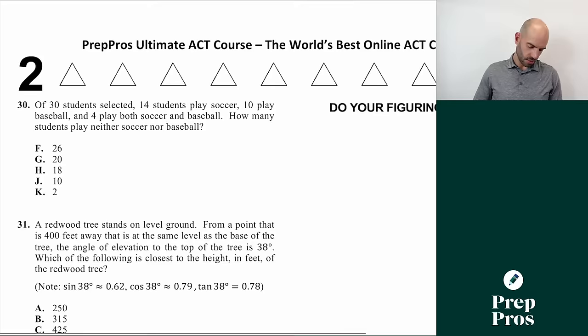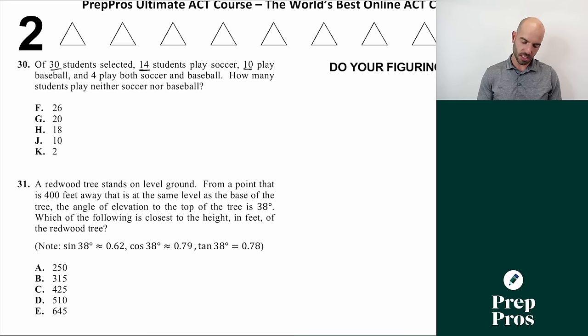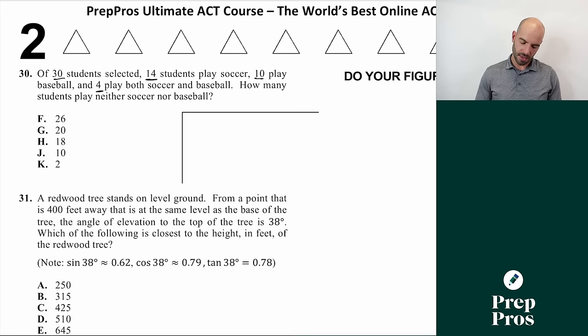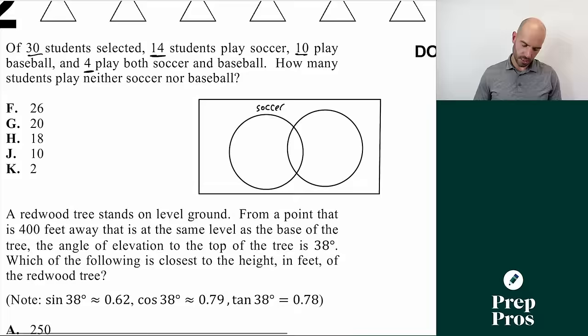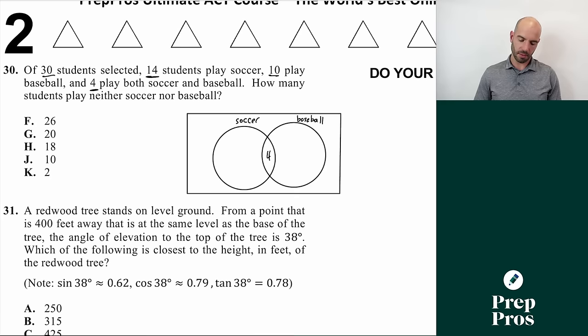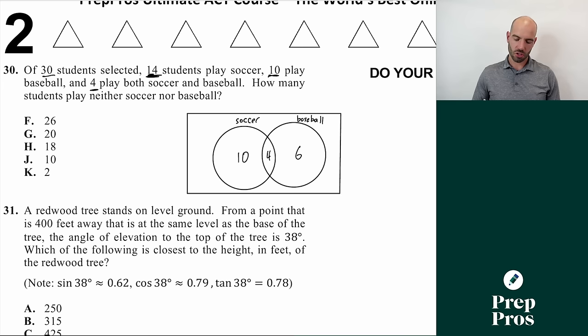Number thirty is a Venn diagram question. 30 students total: 14 play soccer, 10 play basketball, 4 play both, and we need to find how many play neither. Start with the overlap: 4 play both. Then 14 minus 4 equals 10 play only soccer, and 10 minus 4 equals 6 play only basketball. Adding 10 plus 4 plus 6 equals 20 students accounted for. With 30 total, the remaining 10 play neither. The answer is J.